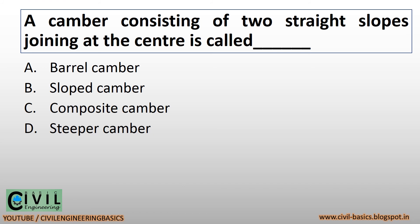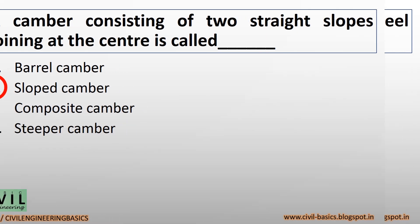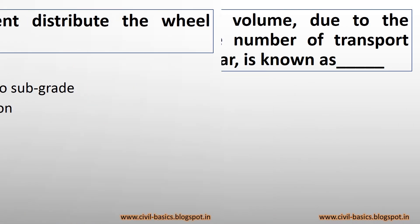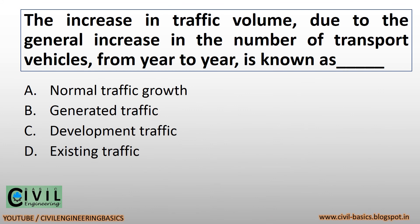A camber consisting of two straight slopes joining at the center is called a sloped camber. The flexible pavement distributes the wheel load through a set of layers to the subgrade. The increase in traffic volume due to the general increase in the number of transport vehicles from year to year is known as normal traffic growth.